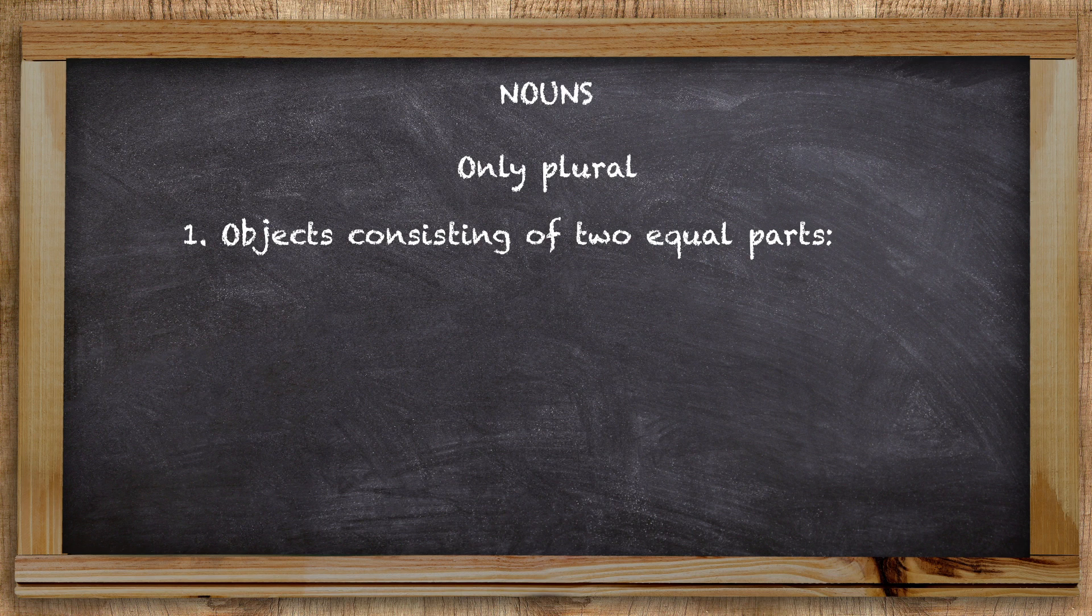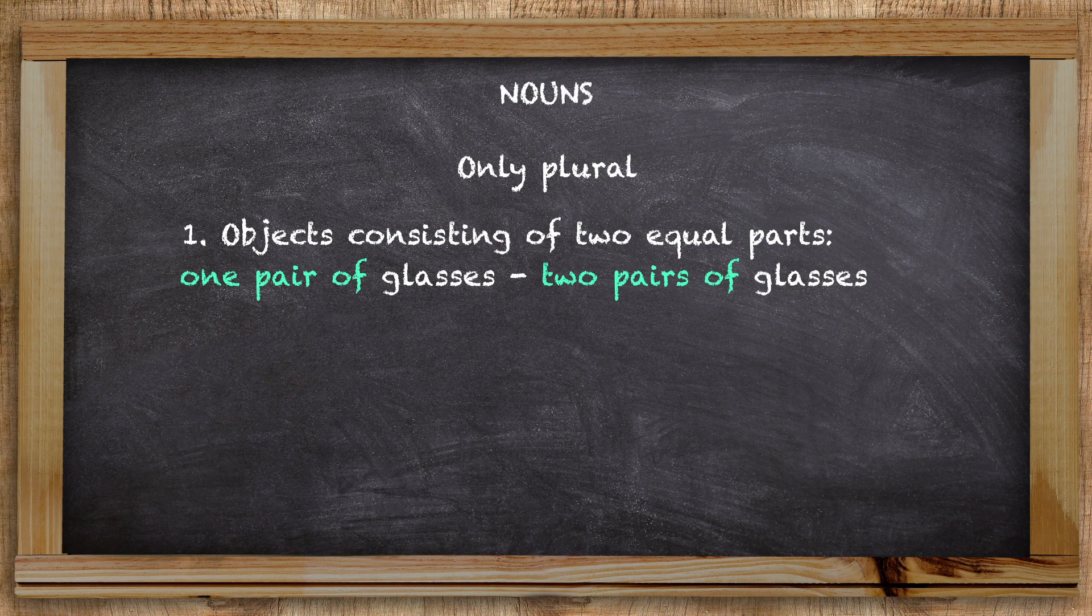In order to indicate whether we use the singular or plural form, we add the words a pair of or pairs of. One pair of glasses, but two pairs of glasses. One pair of scissors, but two pairs of scissors.